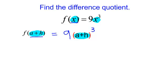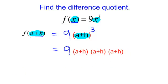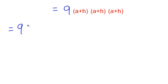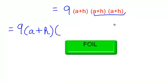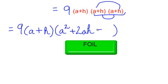This is just a lot of distributive property. So I will have 9 times a plus h cubed, which means a plus h times a plus h times a plus h. I will bring down my 9 and my first a plus h, and I am going to do FOIL on the second two. First term, a times a, we get a squared. The outer term will be ah, the inner term is ah, so 1ah plus 1ah is 2ah. And the last term, h times h is h squared.